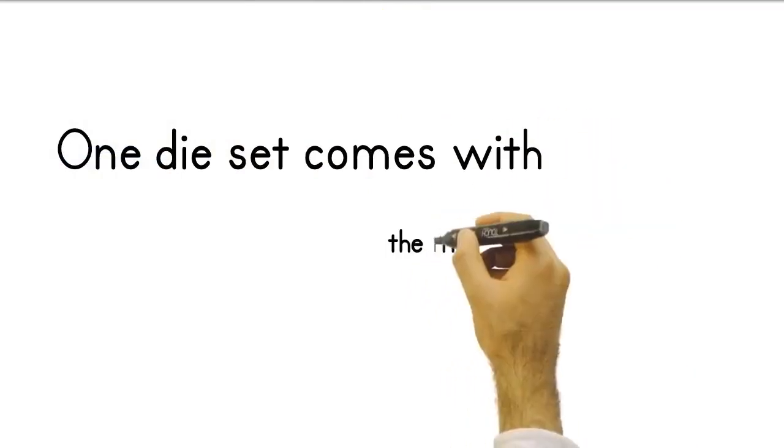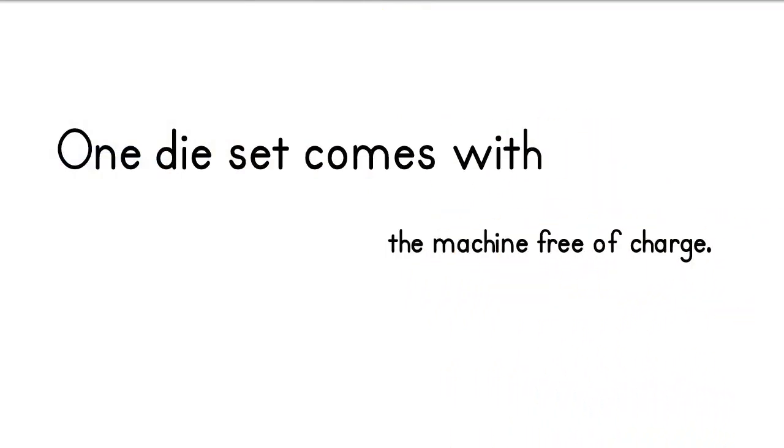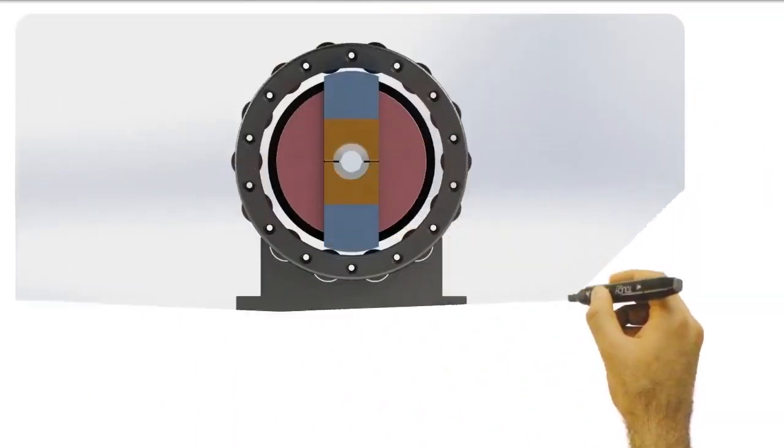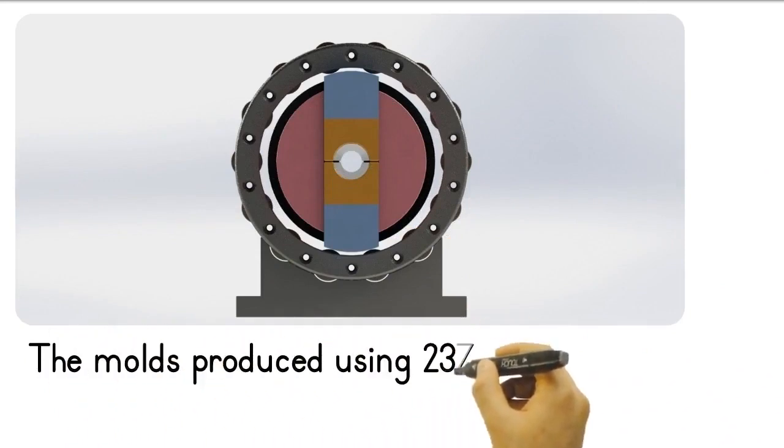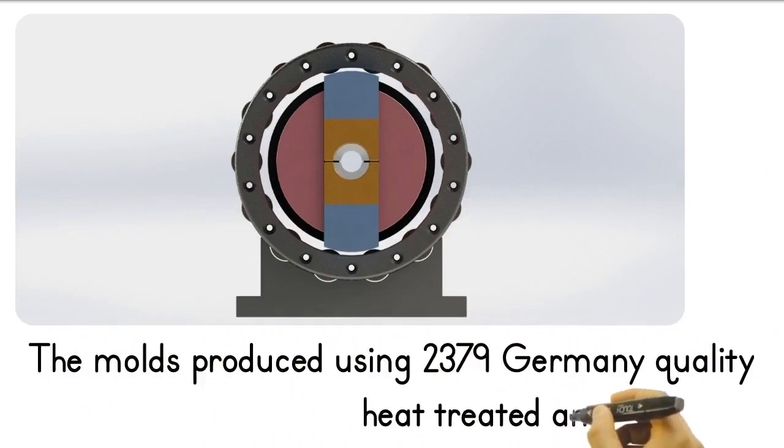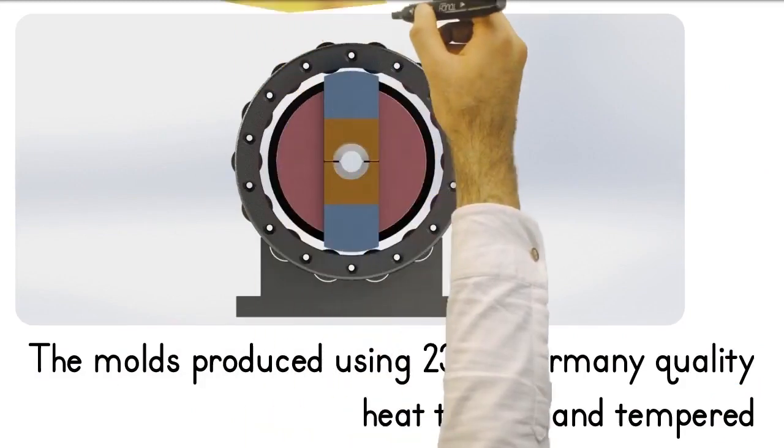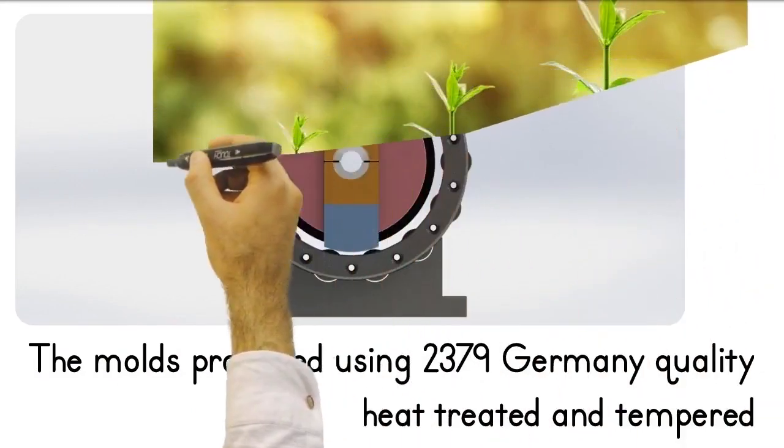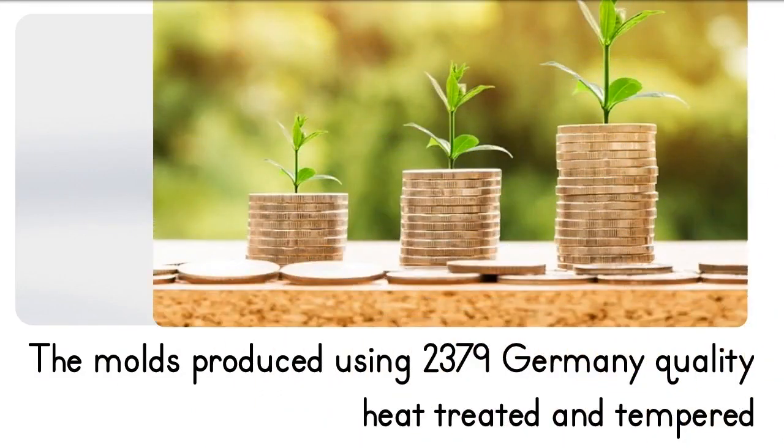One die set comes with the machine free of charge. The molds are produced using 2379 quality, heat-treated and tempered Germany origin mold materials that are highly abrasion and impact resistant. Extra molds are supplied at very reasonable prices.